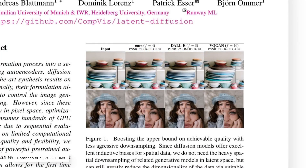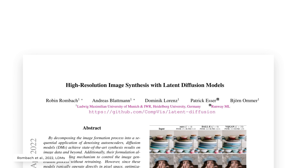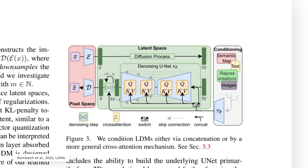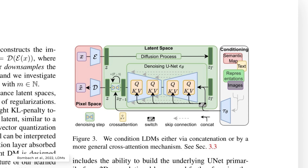How can these powerful diffusion models be computationally efficient? By transforming them into latent diffusion models. Robin Rombach and his colleagues implemented this diffusion approach within a compressed image representation instead of the image itself, and then work to reconstruct the image — so they are not working with the pixel space or regular images anymore.